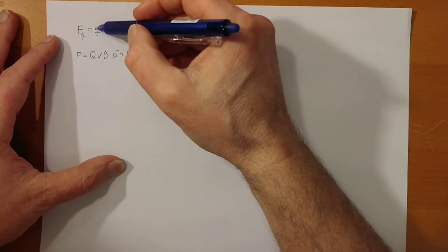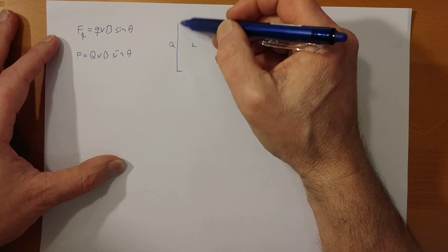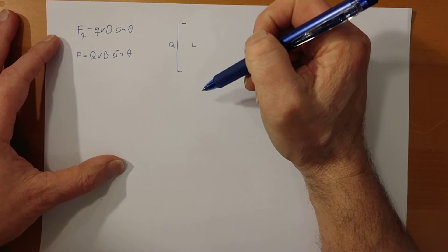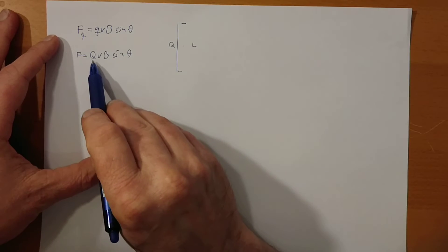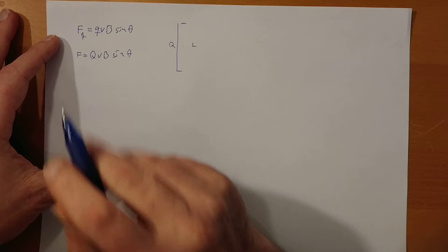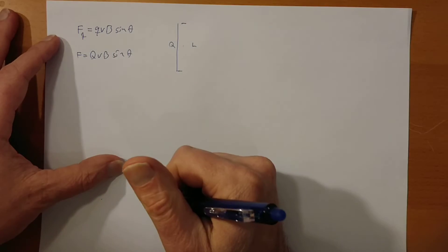So instead of having a single charge, we think about a bunch of charges moving along in a straight line, and the total force of that would be the total charge times the velocity of those charges, assuming they move with the same velocity, times sine of theta.